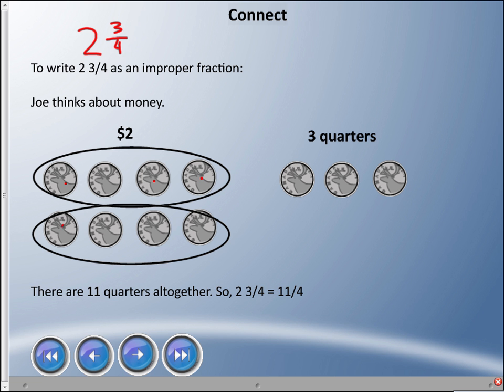Well, I have one, two, three, four, five, six, seven, eight, nine, ten, eleven. If there are four in a dollar, I have eleven quarters, and literally that's what you're saying: eleven quarters.